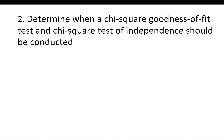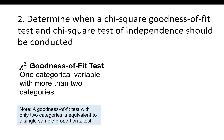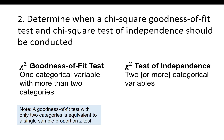Our second learning objective is to determine when a chi-square goodness of fit test and chi-square test of independence should be conducted. A chi-square goodness of fit test is used with one categorical variable with more than two categories. A goodness of fit test with only two categories is equivalent to a single sample proportion z-test, and in those cases the z-test is preferred. A chi-square test of independence involves two or more categorical variables, though in this course we'll only be doing two-way chi-square tests.